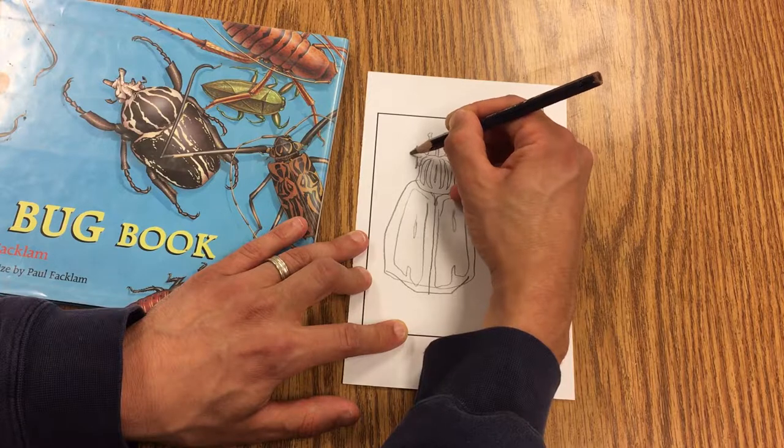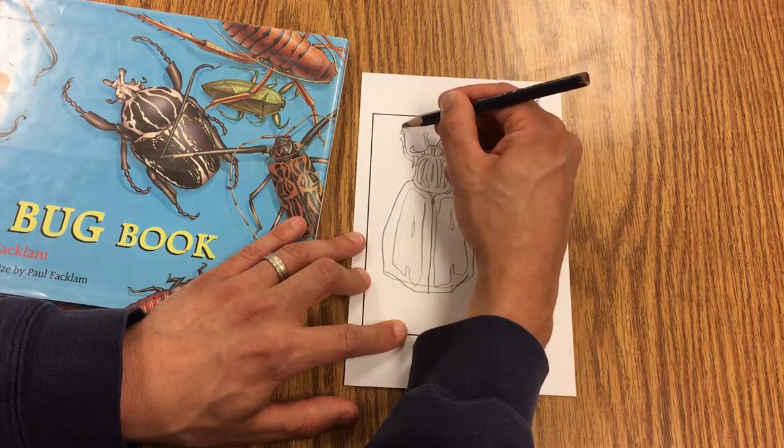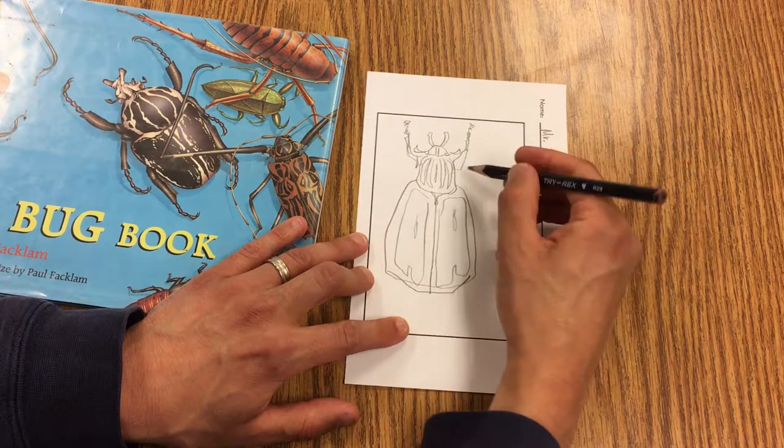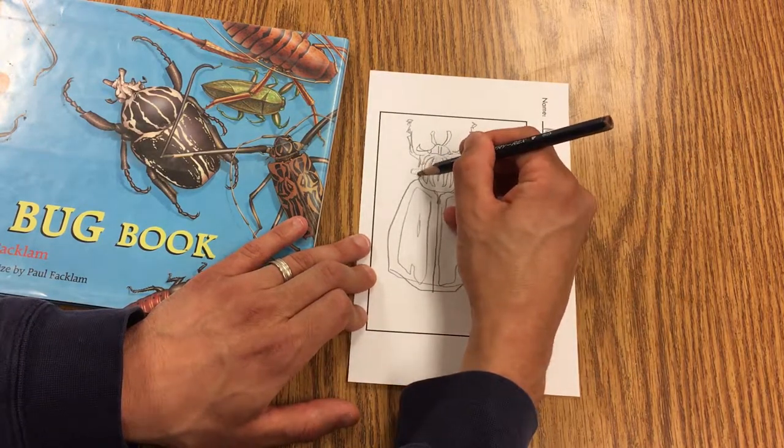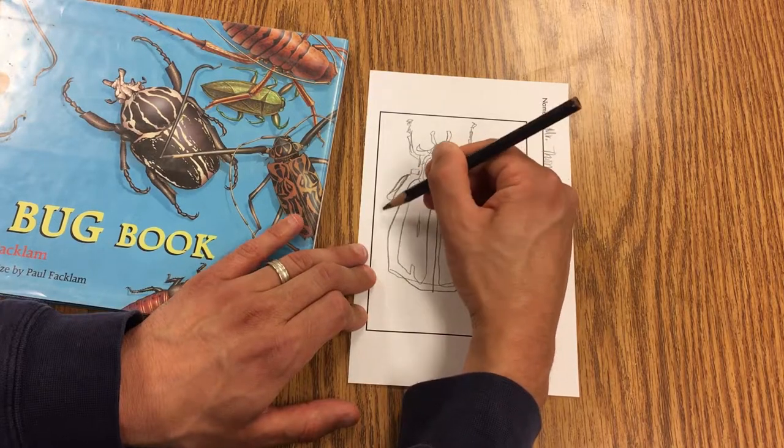And insects also have six legs, so be careful if you find one that's got eight legs, that is not an insect. Might be called a bug, but it's not an insect.